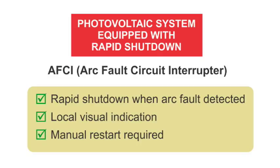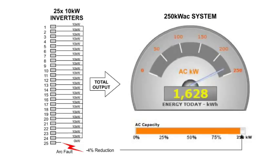When an arc fault is detected, the equipment must be rapidly shut down. After an AFCI shutdown, the PV system is disabled with a local visual indication of the fault. By code, the system can only be manually restarted to resume operation, which requires a site visit. On a typical system with multiple string inverters, the inverter that detects an arc fault will shut down and display an error message on its screen.